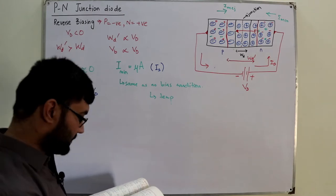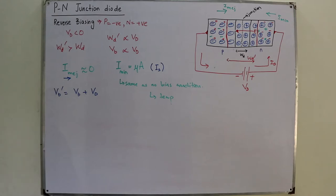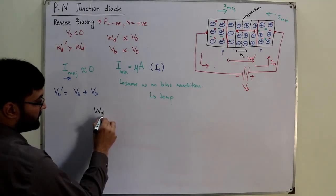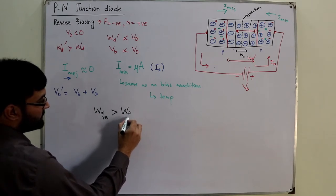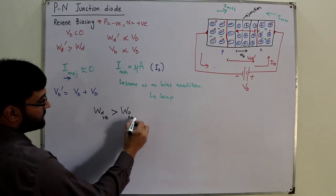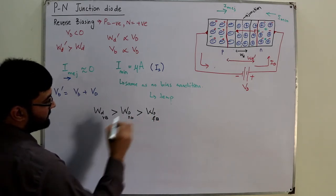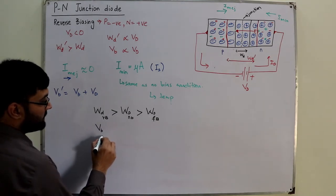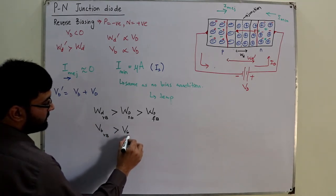The reverse saturation current depends only on the rise of temperature. Regarding the width of the depletion region: it is greatest in reverse bias, then in no bias condition, and smallest in the forward bias condition. Similarly, the barrier potential is greatest in the reverse bias, then in no bias, and smallest in the forward bias.